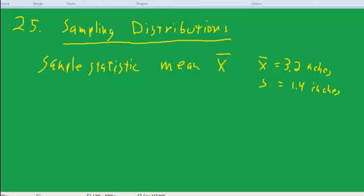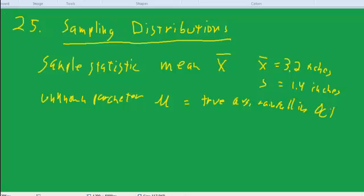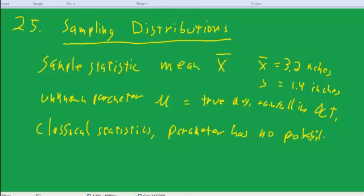Typically, we take a sample statistic in order to estimate the true unknown parameter. The unknown parameter μ is the true average rainfall in October, in our example. We don't know what that is. And the thing about classical statistics, and I'm going to say this again several times, but in classical statistics, the parameter has no probability distribution. It is what it is, we just don't know what it is.